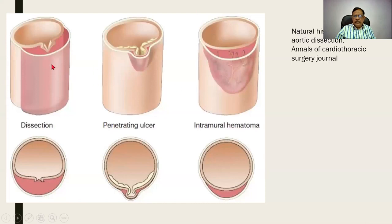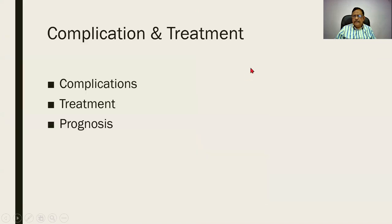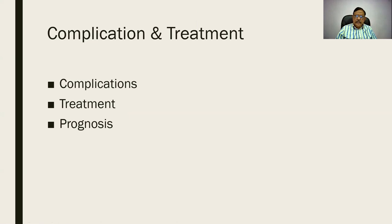A series of pictures showing the dissecting aneurysm. The complications: in one scenario, due to the powerful force of hypertension, blood can rupture to the outside and the patient can die immediately. The second, if the patient is more lucky, it can rupture back into the lumen. The treatment is replacement of the region of aneurysm by a synthetic graft; otherwise the patient will die in a few months, and even with surgery the prognosis is restricted to one or two years.